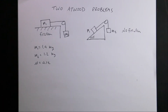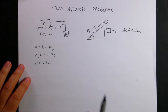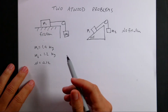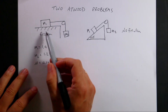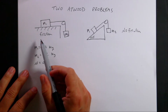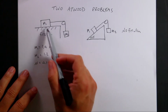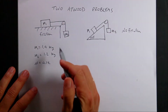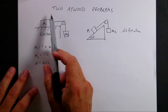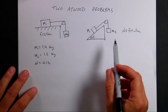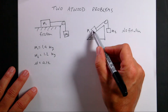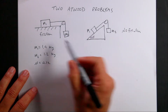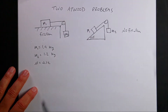Here are two Atwood machine problems I'm going to solve — a double back-to-back. The first problem is your classic half-Atwood machine where you have a mass on a table and a mass hanging over a pulley, but there's friction on the surface. The second problem has no friction but the surface is inclined instead of flat. I'm going to start with the first one.